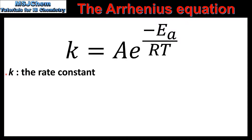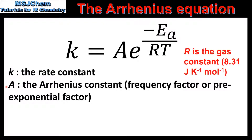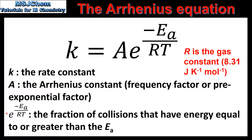K is the rate constant. A is the Arrhenius constant, also known as the frequency factor or pre-exponential factor. E raised to the power of negative Ea over RT is the fraction of collisions that have energy equal to or greater than the activation energy — in other words, the fraction of collisions with sufficient energy to react.